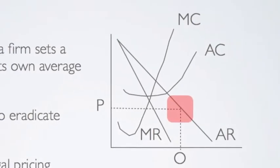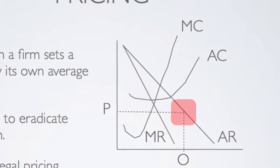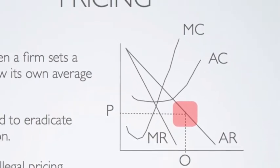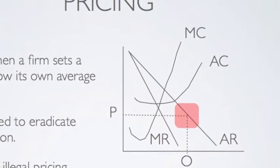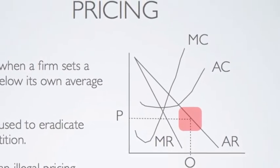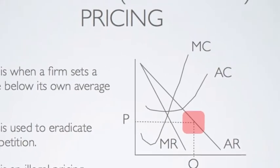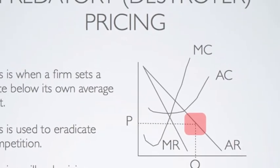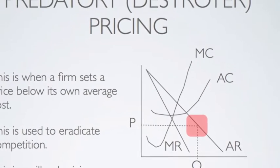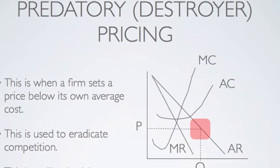Predatory or destroyer pricing is when a firm prices below its own average cost. This is used to eradicate competition. It is, however, an illegal pricing strategy.